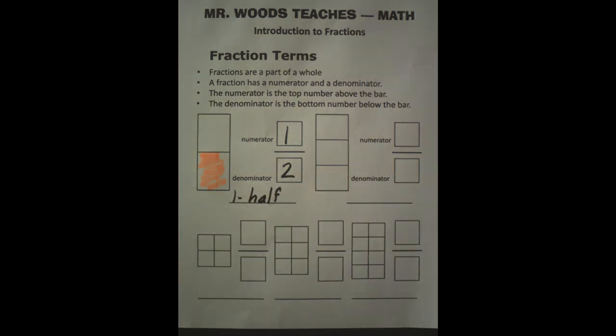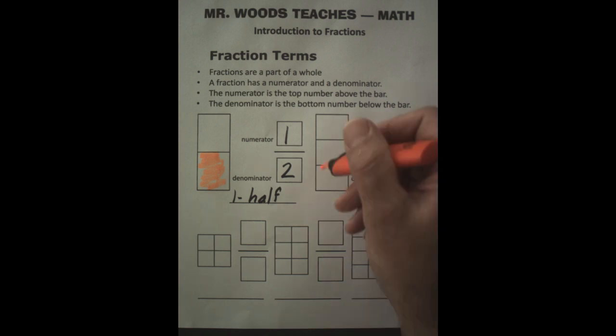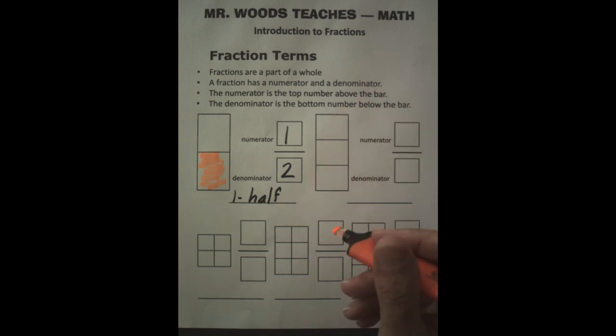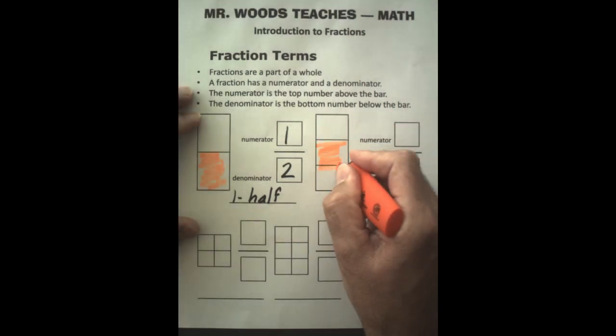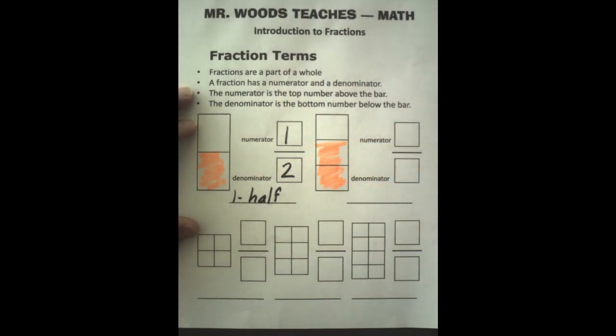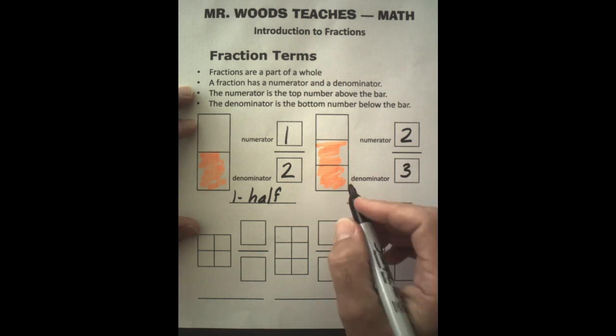Next up, I have a whole which has three pieces of it. They're equal. If I shade in two of these, I put in the shaded pieces at the top, so that's going to be two as the numerator. The whole is three, so it's going to be three. And what this means, it's two thirds.